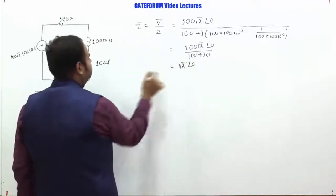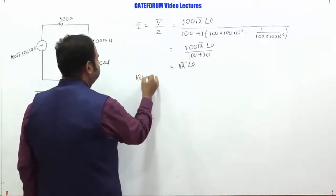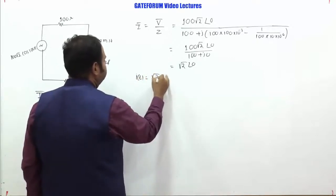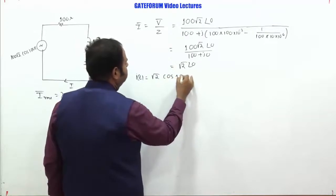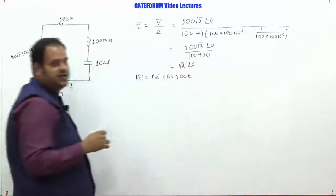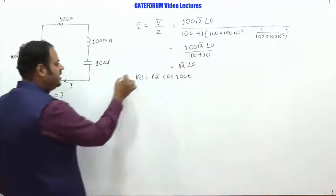So if this is the phasor notation, if I ask you what is i(t), it would be root 2 cos of, what is the frequency, 100t. So this is the current expression i(t).